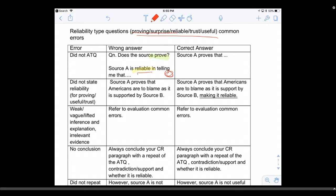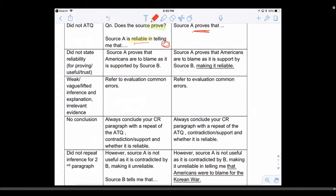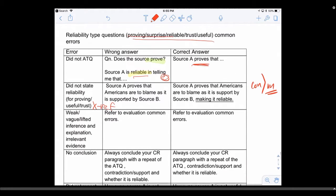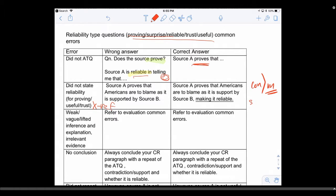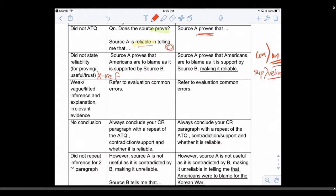Number two: did not state reliability. This is for proving, useful, and trust. For your cross-referencing, when you're doing your cross-ref, make sure you state the contradiction makes it unreliable, or the support makes it reliable.